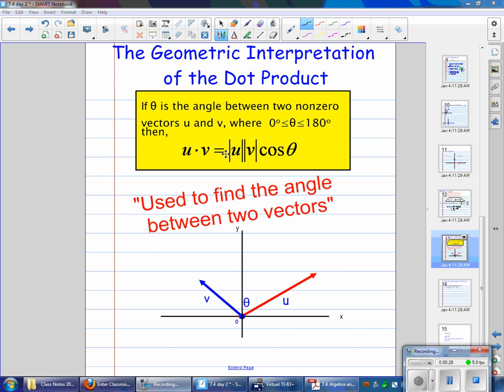It's not the only way to do this, but it is one of the more efficient ways. It says if theta is the angle between two non-zero vectors u and v, where 0° ≤ θ ≤ 180°, which means it should give us an answer that's less than 180 degrees. So you've got to be careful which way the vectors are pointing. If they're pointing down, we'll still get the angle between them, but just watch out for that. There can't be more than 180 degrees between them.